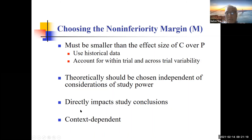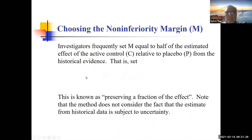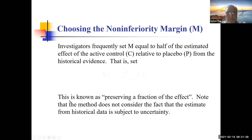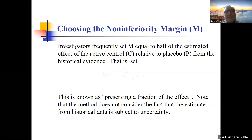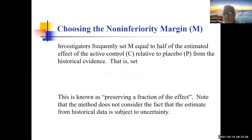A common approach is to set M equal to half the estimated effect of active control relative to placebo from historical evidence — this is known as preserving a fraction of effect, specifically preserving 50% of the effect. You can choose to preserve 60% or 70%, which leads to different choices of margin. The margin must be chosen independent of sample size considerations, though it should be smaller than the effect size of active control over placebo.